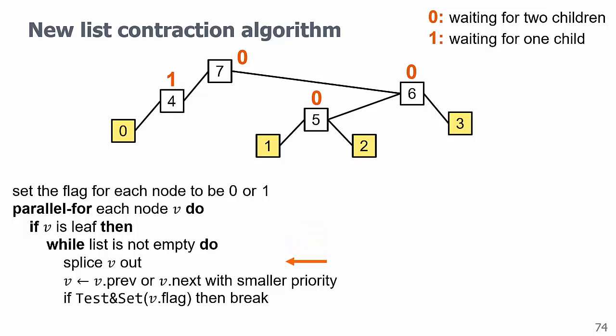Each node starts to contract asynchronously. Let's say node 2 finishes the earliest. It then finds its parent, which is 5 in the figure and this line in the pseudocode. It runs a test and set. In this case, it will succeed and quit.